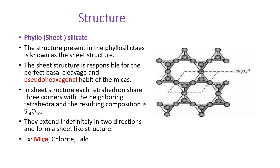The phyllosilicate sheet structure is responsible for both the perfect basal cleavage and the pseudo-hexagonal habit of micas. In this sheet structure, each tetrahedra shares three corners with neighboring tetrahedra, giving the composition Si4O10 (or Si2O5), extending indefinitely in two directions to form a sheet-like structure. Excellent examples include micas and chlorite, which also belong to the phyllosilicates.